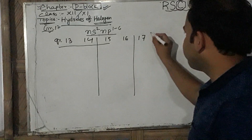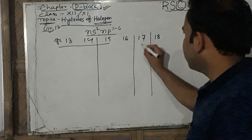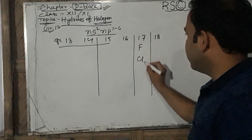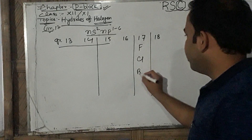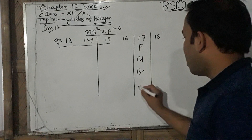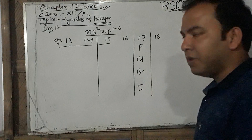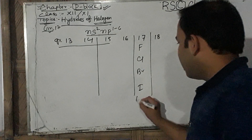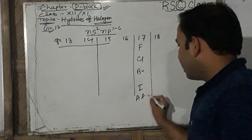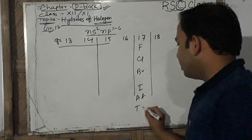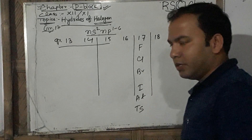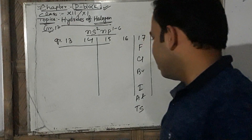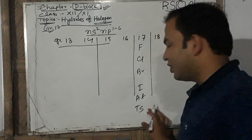We are discussing Group 17 elements — the halogens: fluorine, chlorine, bromine, iodine, astatine, and the newly synthesized element tennessine (discovered around 2018).